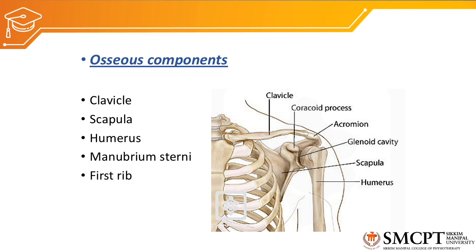The bony components, or osseous components, that form the shoulder complex are the clavicle, scapula, humerus, manubrium sterni, and first rib. You can see in the picture: this bone is the clavicle, this is the humerus, this bone is the scapula, and then the manubrium sterni.